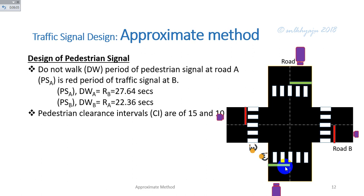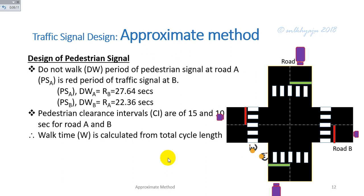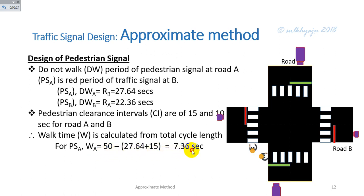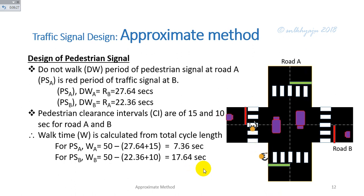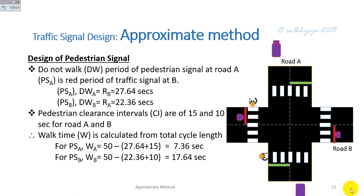The pedestrian clearance interval for Road A is 15 seconds and for Road B is 10 seconds. The walk period is calculated from the total cycle length: for Road A, the pedestrian walk period equals the total cycle length minus the 'Do Not Walk' period minus the clearance interval, calculated as approximately 10.36 seconds. This corresponds to the traffic signal green and amber time for Road A equaling the red timing for the pedestrian signal on Road A.